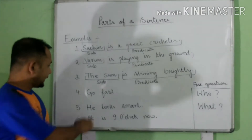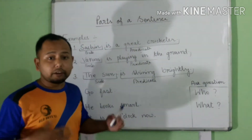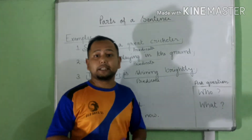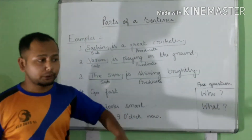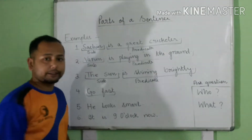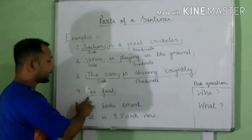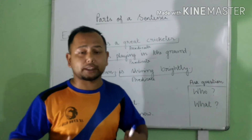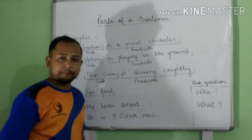Go first. This is an imperative sentence, so the subject is not given — the subject is understood. In an imperative sentence, we are giving a command. So the understood subject is you. Here, you is the subject, and the rest is the predicate.